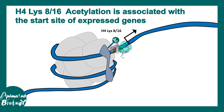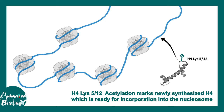Where histone acetylation takes place has deeper meaning. For example, acetylation at H4 histone lysine 8 or 16 is often associated with the transcription start site of genes undergoing active gene expression. In contrast, acetylation at H4 lysine 5 to 12 is associated with newly synthesized H4 molecules ready to be incorporated into a new nucleosome. So it's highly context dependent.